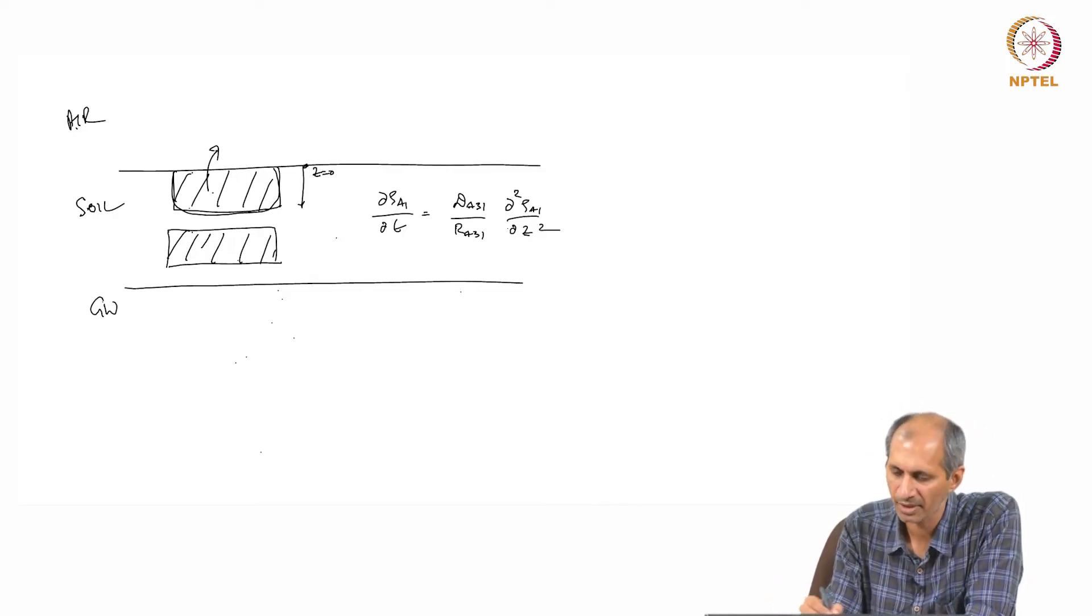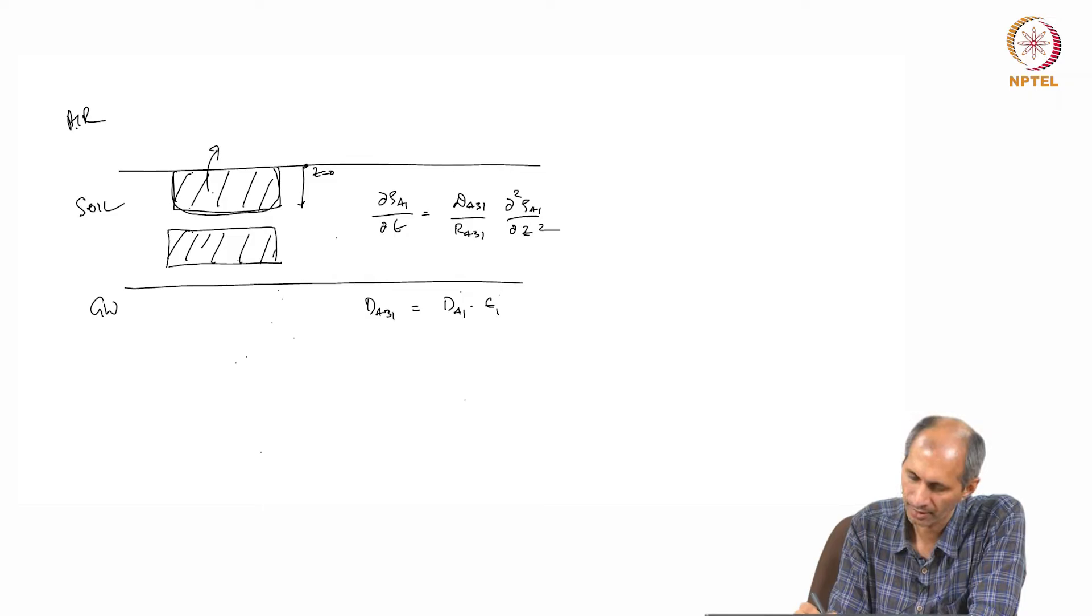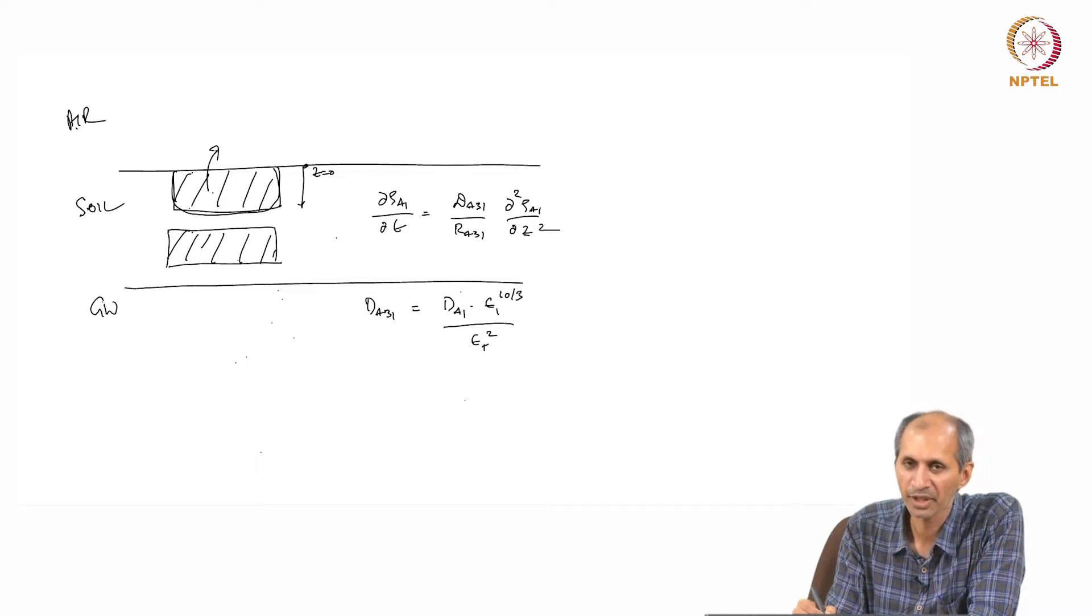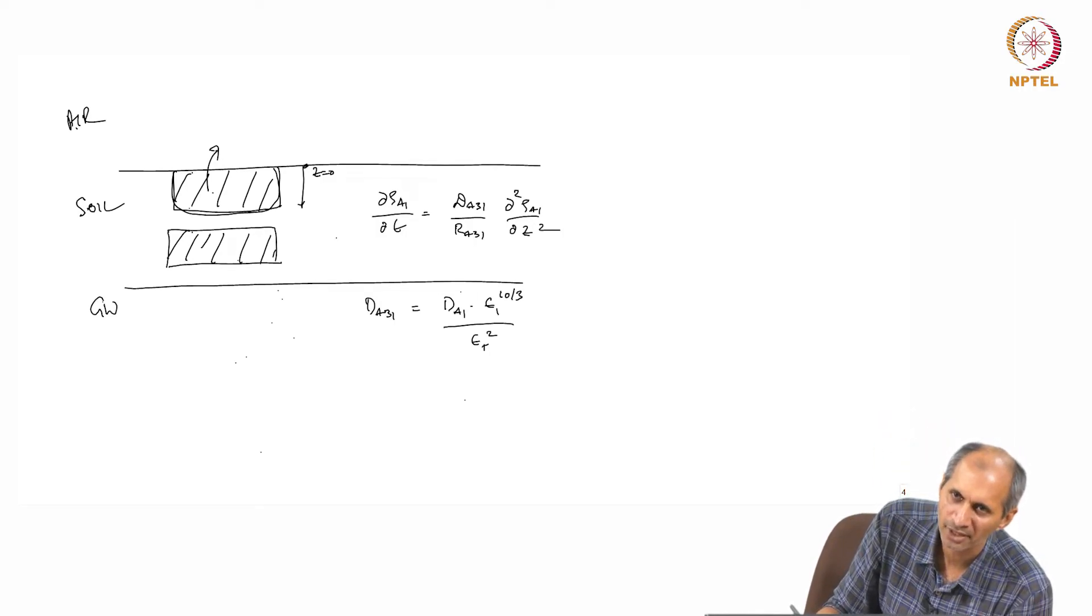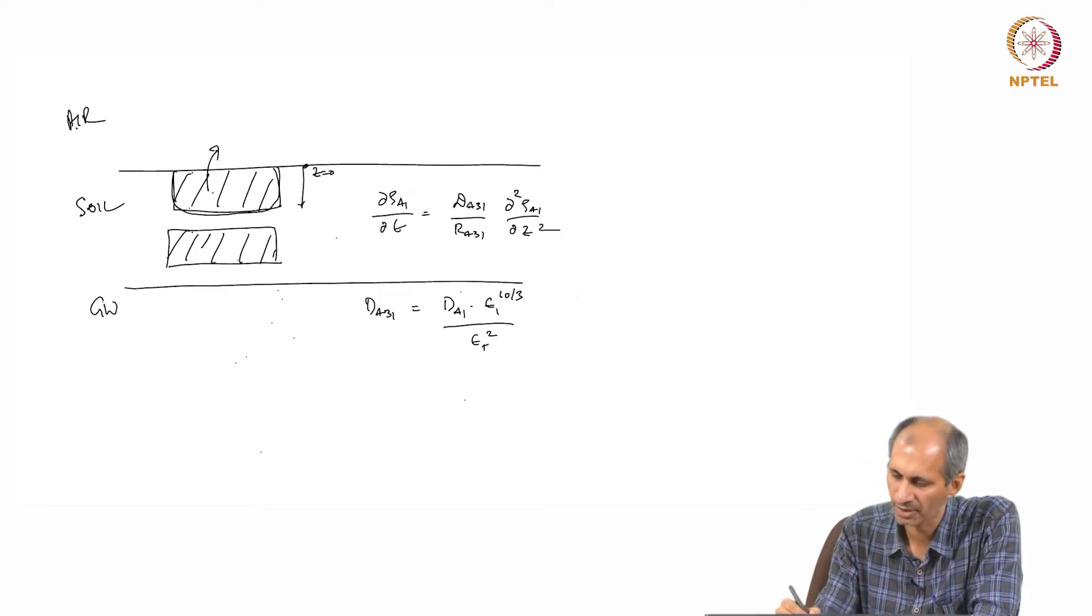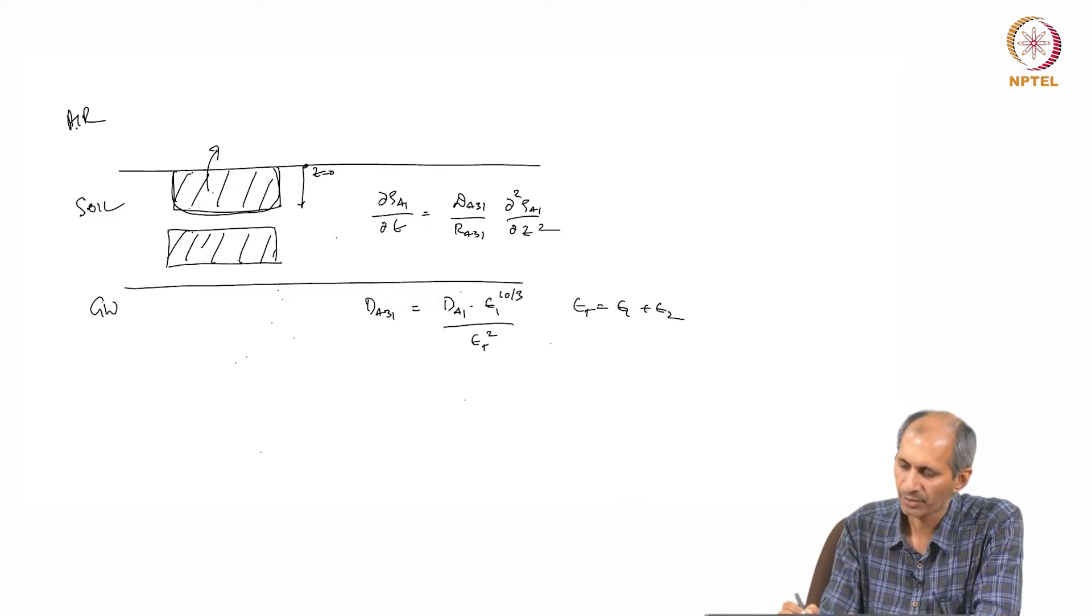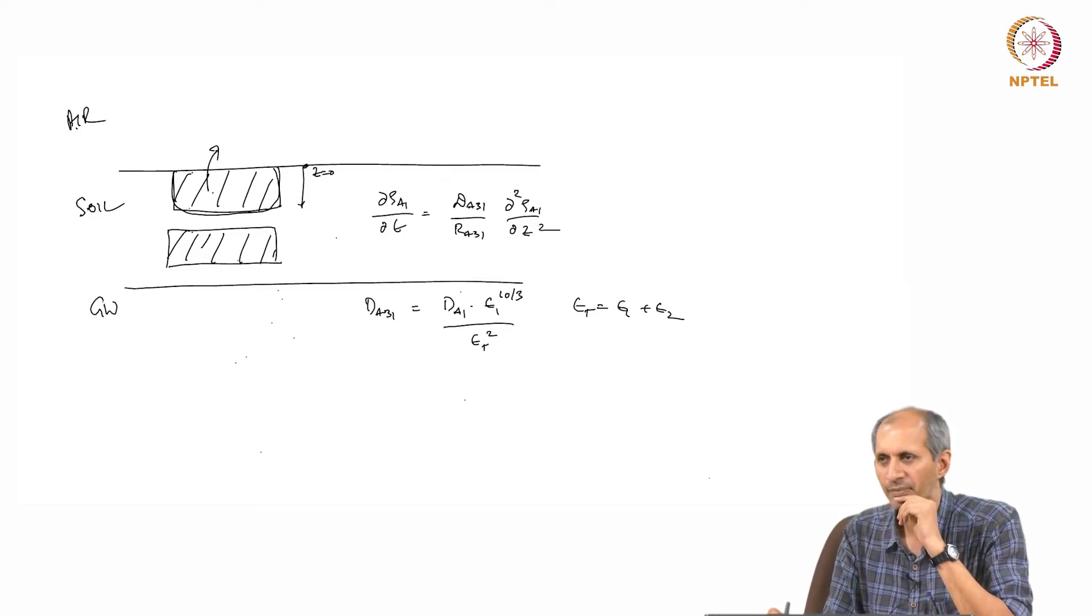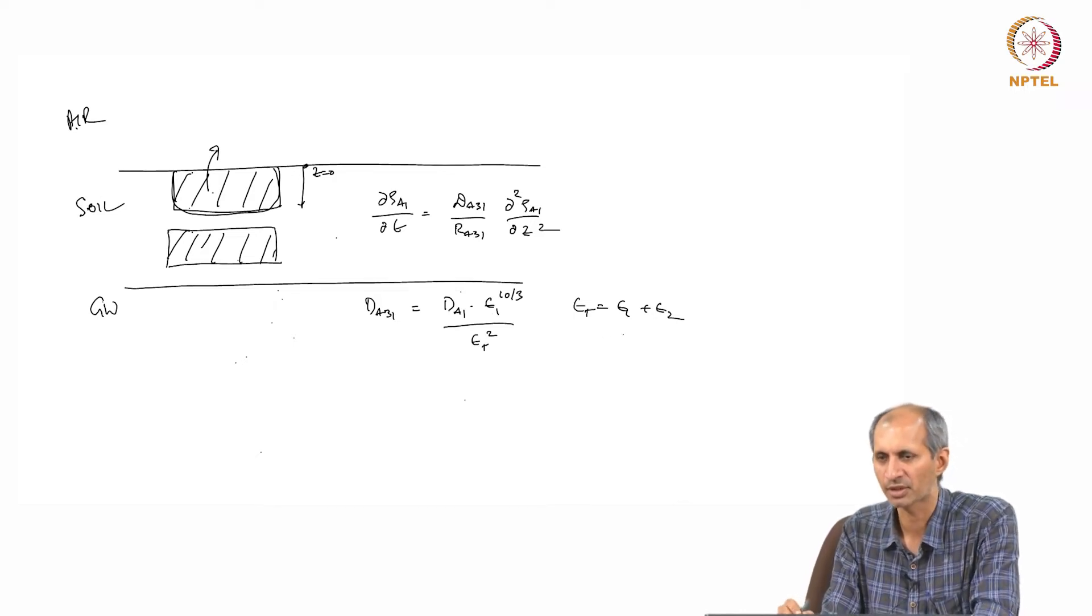Significant difference here, only difference is dA31 is dA1 multiplied by epsilon 1 raised to 10/3 divided by epsilon t square. We do this because unlike sediment, the soil may contain moisture and if it contains moisture, diffusion coefficient in the vapor phase for air will depend on epsilon 1 total which is epsilon 1 plus epsilon 2. If epsilon 2 is negligible, you can assume epsilon t equals epsilon 1. But until that point, if you think that is not valid, then you have to do this.